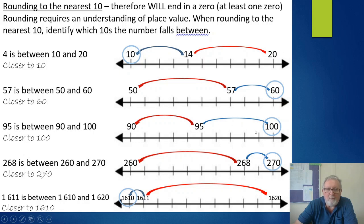It works even for larger numbers. So in three digit numbers, 268 is between 260 and 270, it's still closer to 270, it's rounded up. And if we move into four digits, 1611 is between 1610 and 1620 but it's rounded down. So the trick with rounding is to be able to identify what you're rounding to and therefore those numbers either side of the one you're after.